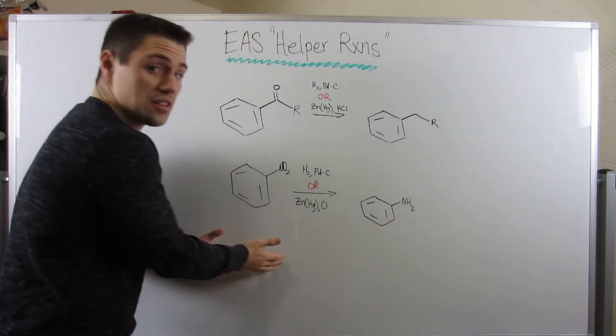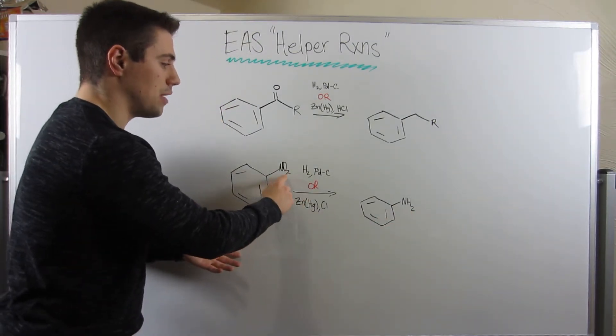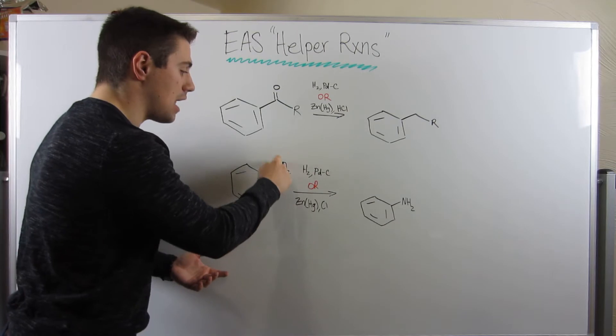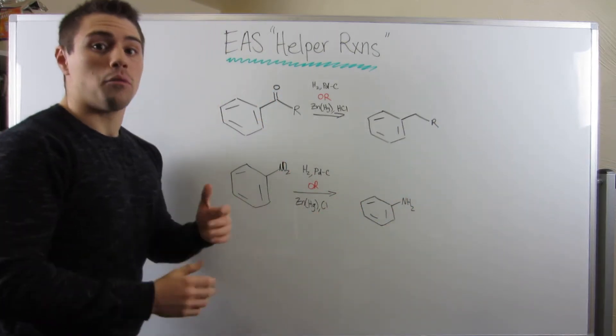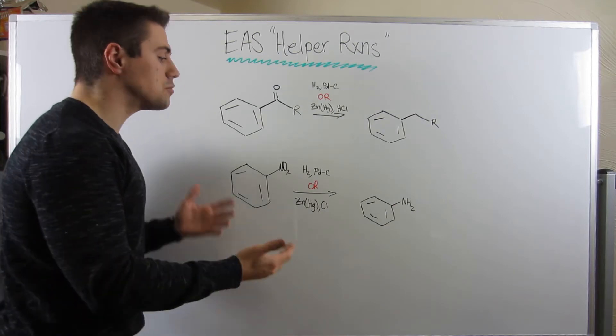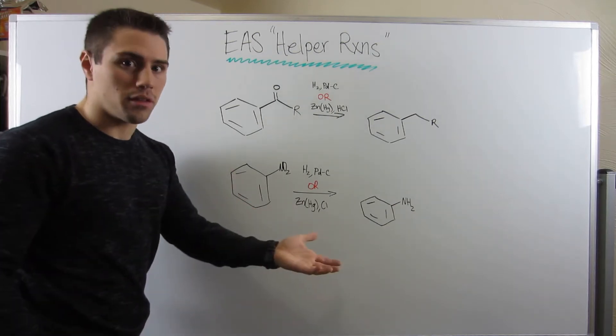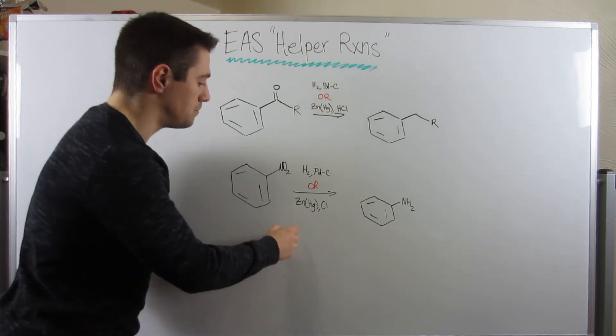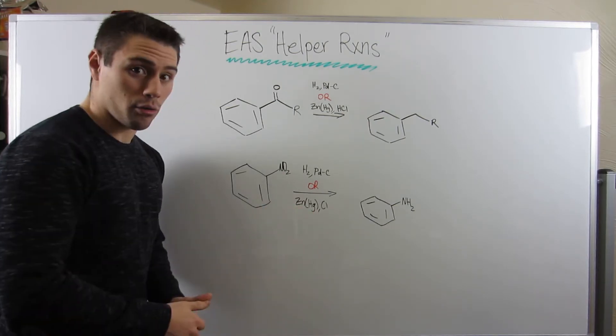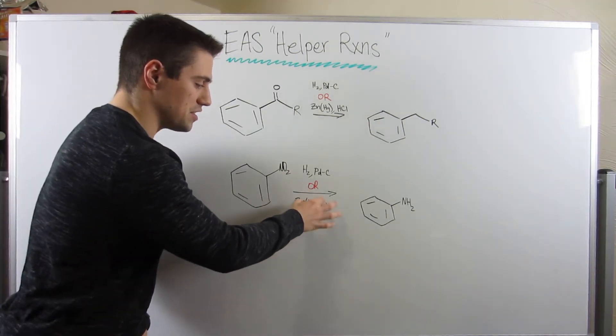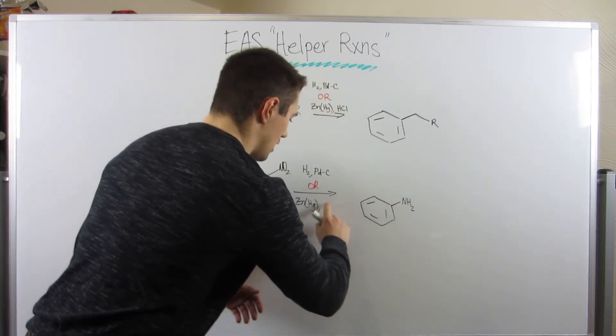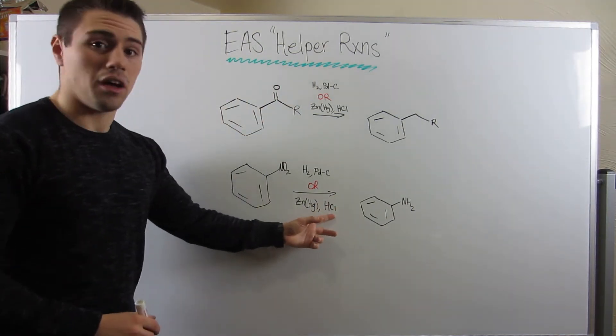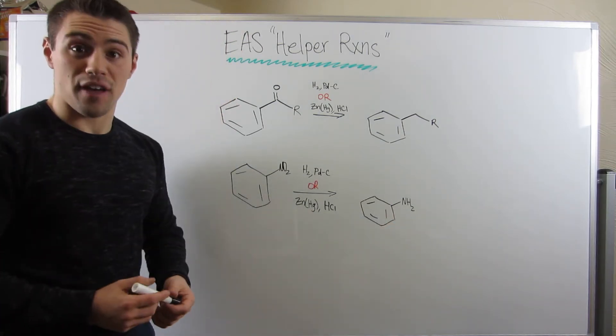So, we saw in the last part of this video that if you have a nitro group, and then you throw in some H2 and PDC, some palladium adsorbed carbon catalyst, you can reduce your nitro group to an amine. Well, there's also another set of reactions you can do that with. It doesn't really matter which one you use. But if you use something called the Clemmensen reduction, you use a zinc-mercury amalgam. Zn with parentheses around the Hg. And then we need HCl.